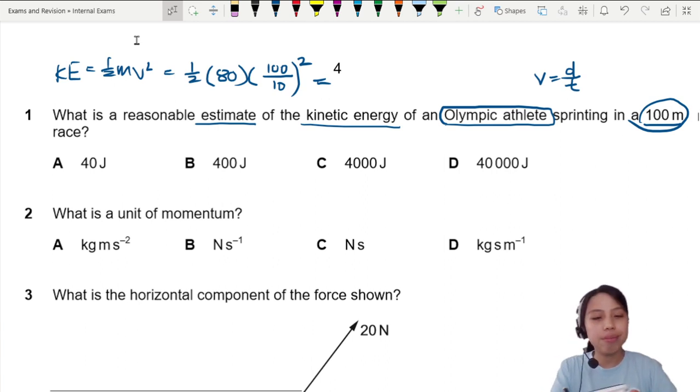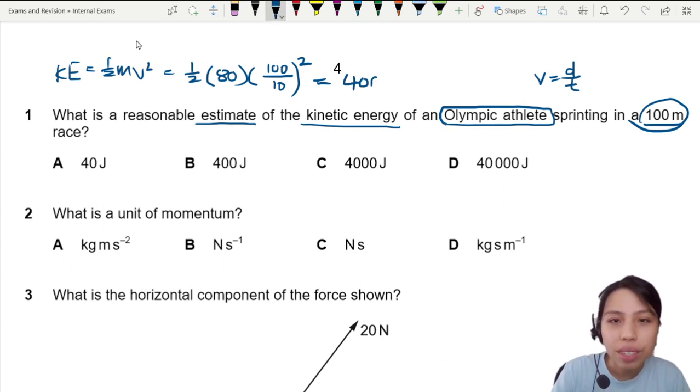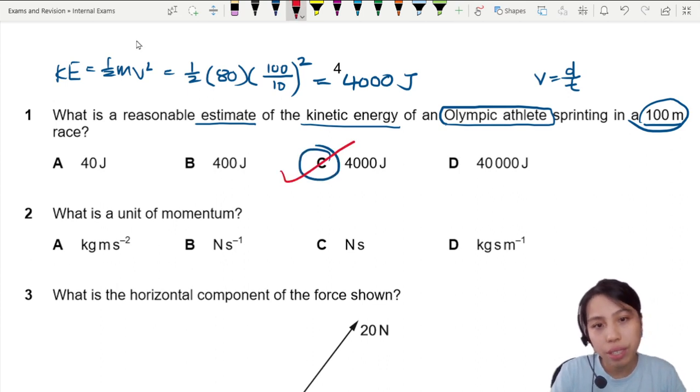we should get... What did we get? Half, 80, and 10 square. Oh, 400, 4,000 joules. So our estimate, based on these numbers, will be 4,000 joules, and that is the correct question.